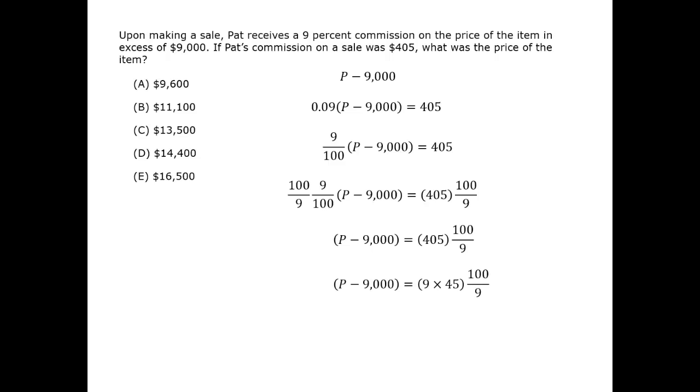This will allow us to write it in a form such that we can cancel the 9 in the numerator and the denominator on the right side of the equation. That way, we are able to solve quickly for P.